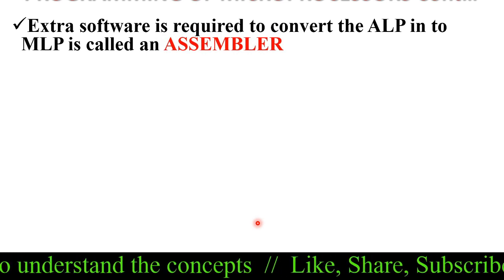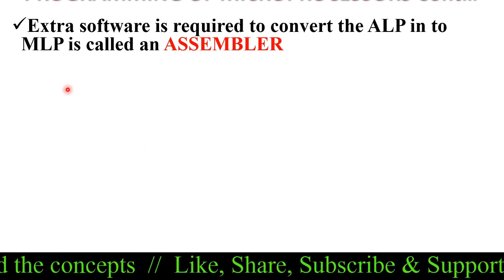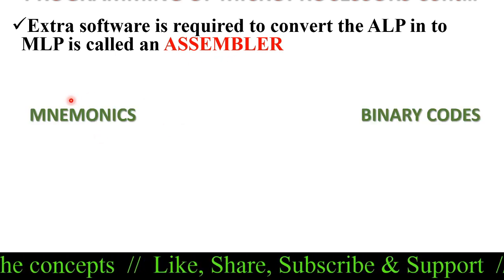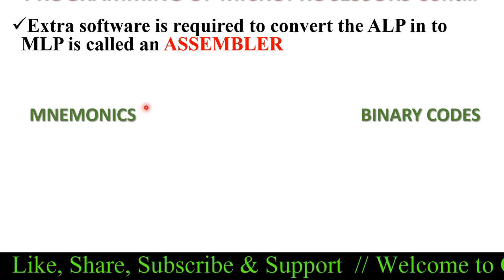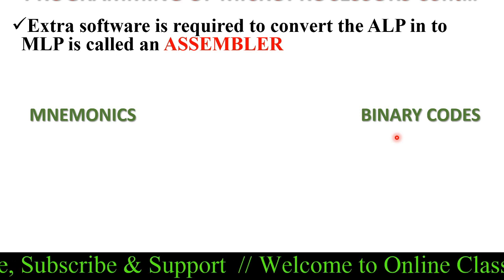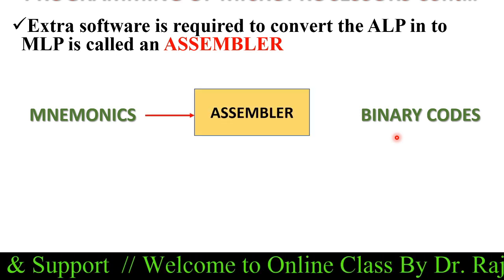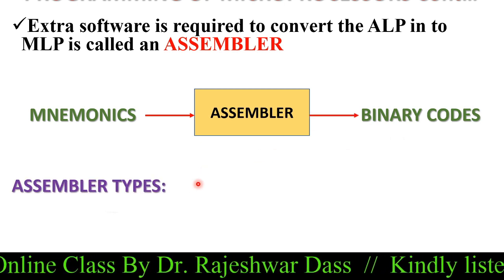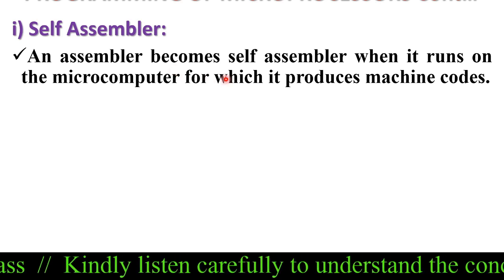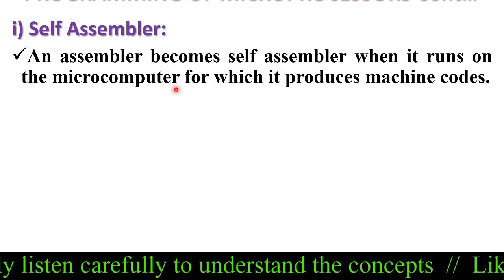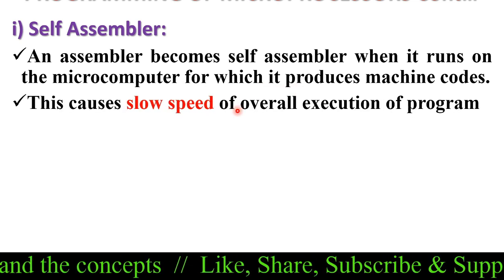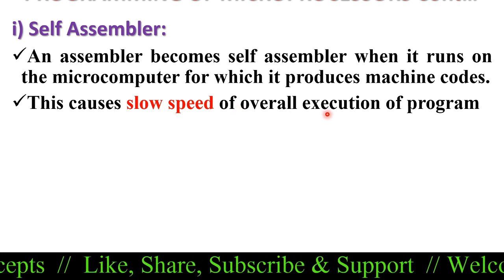Extra software is required to convert the assembly language program into machine language programs, and that software is known as the assembler. The mnemonics written in assembly language are converted into binary machine codes with the help of the assembler. The assembler may be of two types: self assembler or cross assembler. A self assembler runs on the microcomputer for which it produces machine codes, which causes slower overall execution speed.